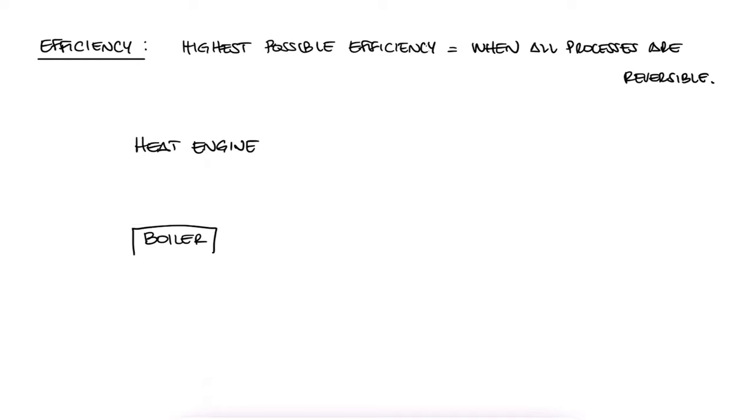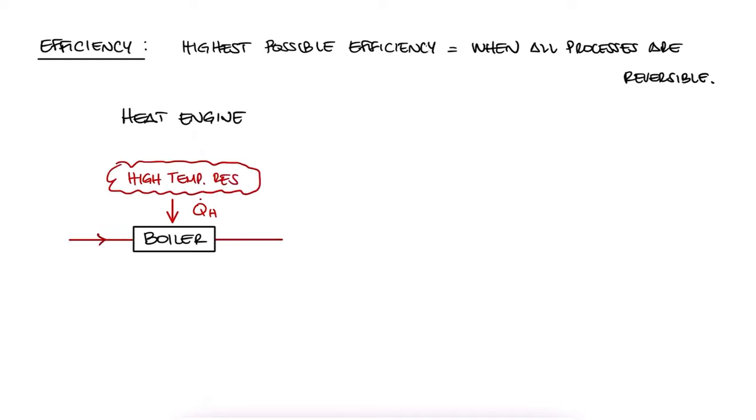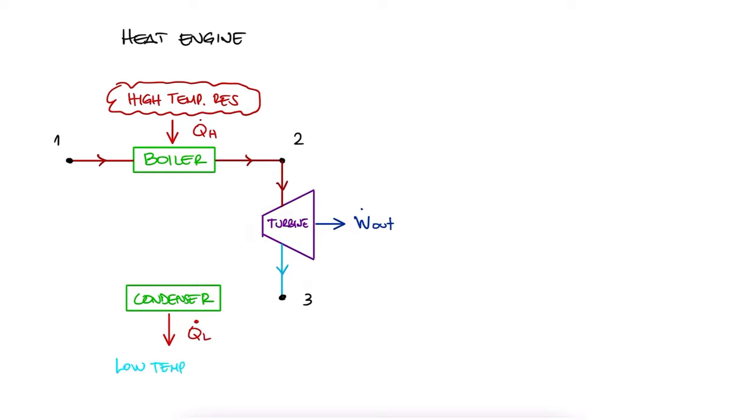The heat engine was comprised of a boiler where we add heat from a high temperature reservoir to the working fluid, a turbine where the fluid is expanding while producing work, a condenser where heat is rejected to a low temperature reservoir, and finally a pump or a compressor that use the work that we put into them to increase the fluid's pressure.